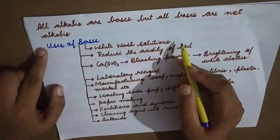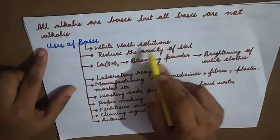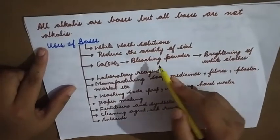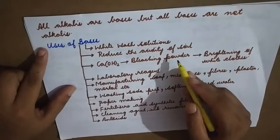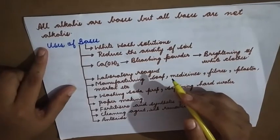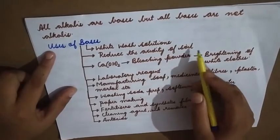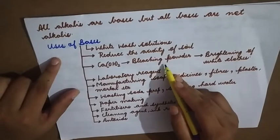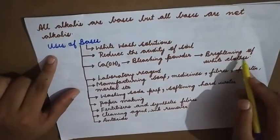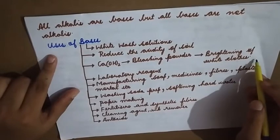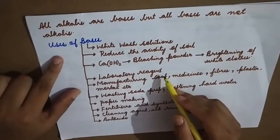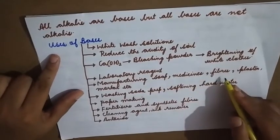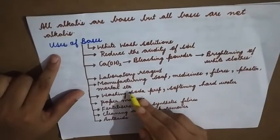Uses of bases: bases are used in white-wash solutions. Calcium hydroxide reduces the acidity of soil — when soil is too acidic, we add a base. Calcium hydroxide is used in bleaching powder, which helps in brightening white clothes. It is also used as a laboratory reagent and in the manufacture of soap, medicines, fibers, plaster, and mortar.